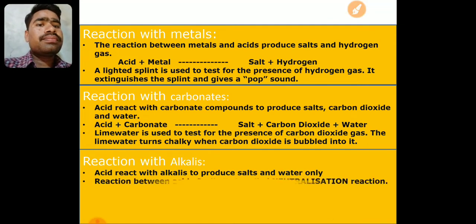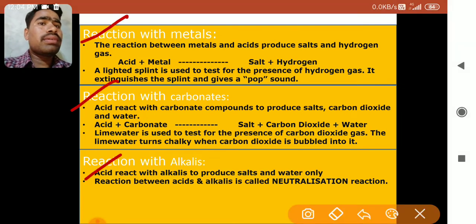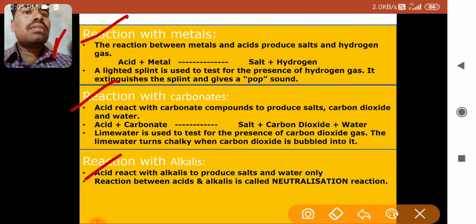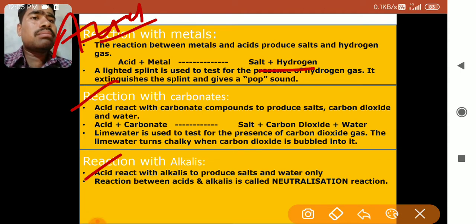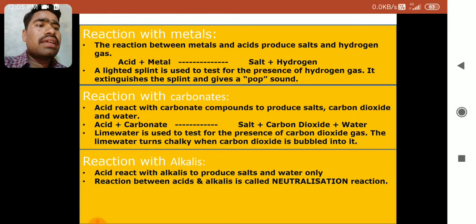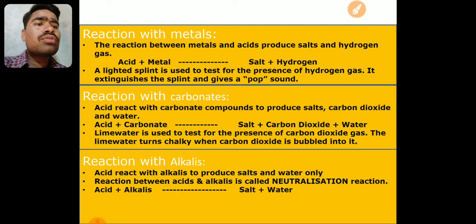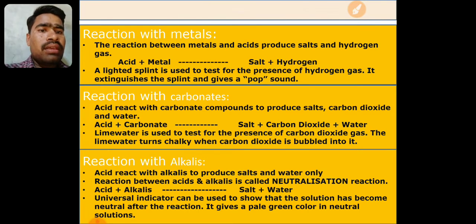Let us recapitulate the chemical properties. When acid reacts with metal, they form salt and hydrogen gas. When acid reacts with carbonates, the products are salt, carbon dioxide, and water. When acid reacts with alkalis, they form salt and water.